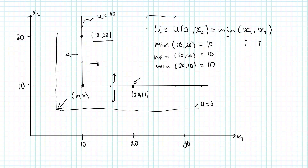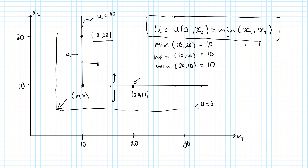So this utility function works perfectly well in representing perfect complements when we always consume them in a 1-to-1 ratio. So how about perfect complements that are not consumed in a 1-to-1 ratio? Well, one way we could do that is just to see what an indifference curve would look like for a utility function such as this one.